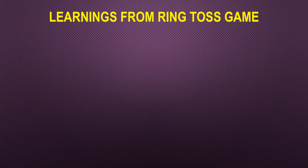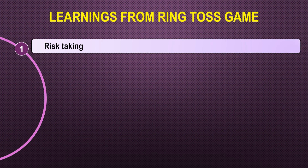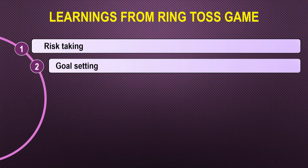What is the learning from this ring toss game? The first learning is risk taking — how much risk you can take. We should take a very calculated, moderate, and intelligent risk. If you are standing at number 1 or 2, which are very close, there is no real risk. If you are standing at number 9 or 10, which are very far off, that is like gambling — it is not calculated risk taking. You should take a calculated risk by standing at number 4, 5, or 6. The second is goal setting — how do you set goals. Based on your abilities you have to set your goals. If a person is six feet tall he can afford to go to position 5 or 6, but if a person is very short in height he has to stand at 1, 2, or 3.